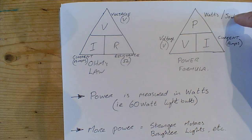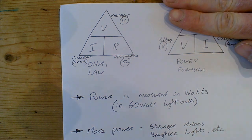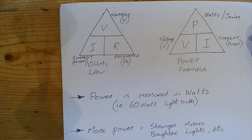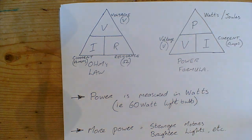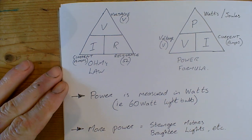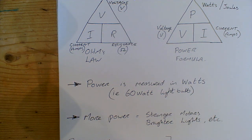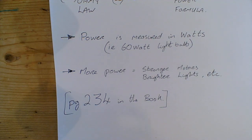If I want to find out what the power is of a circuit, if I cover the P, it's our voltage multiplied by our current. If I want to find out what the current is, it's power divided by voltage. I'm looking for these bullet points and these triangles in your notes copy. You've got that bullet point: power is measured in watts, more power equals stronger motors, brighter lights, and so on.